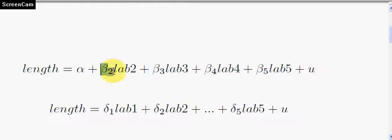So beta two here is how much more or less the average length is for lab two compared to lab one, likewise for three, four, five.